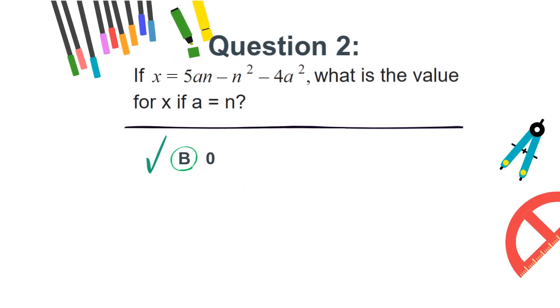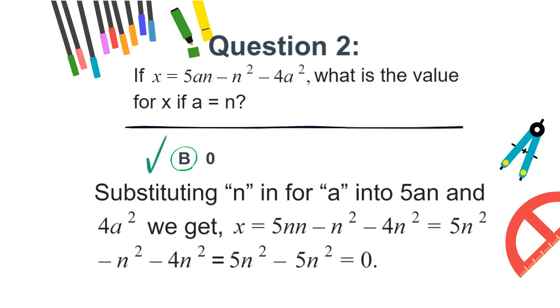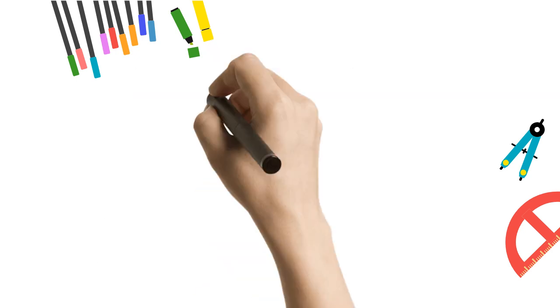The correct answer is b. 0. Substituting n for a into 5an and 4a squared, we get the following. Answers c and d may have come from incorrectly substituting a and n, thus simplifying incorrectly.